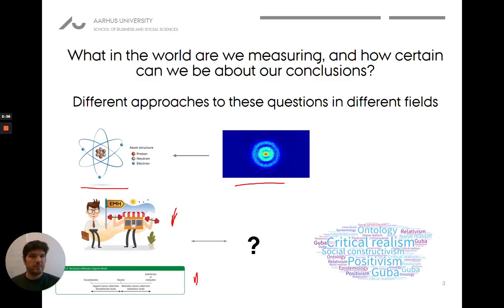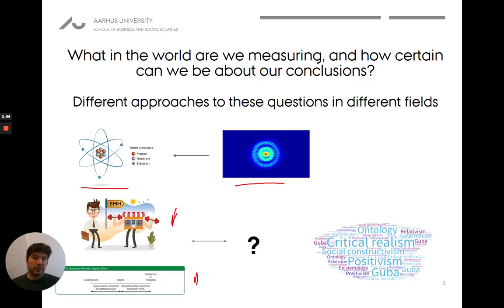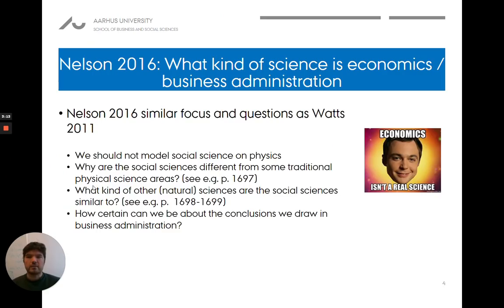It's the same with the efficient market hypothesis. We might have a good theoretical understanding of roughly what it is, and we can use it to explain today's capitalistic society and how values emerge. But we can't point to somewhere in a stock market and say, here it is. And sometimes the market appears to be less efficient than it should be. Atoms always behave the way we expect them to.